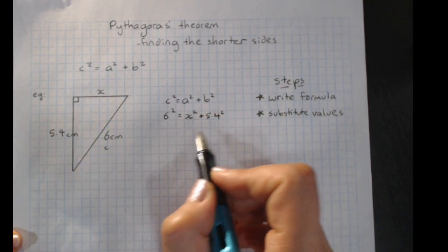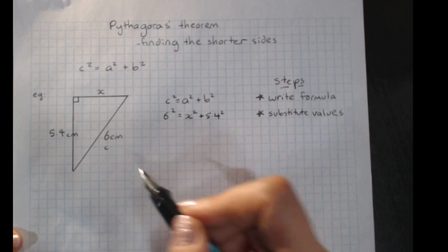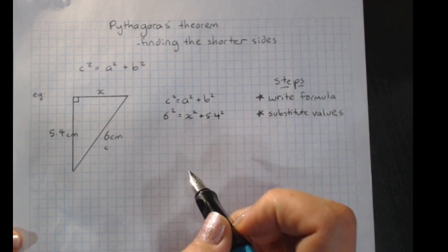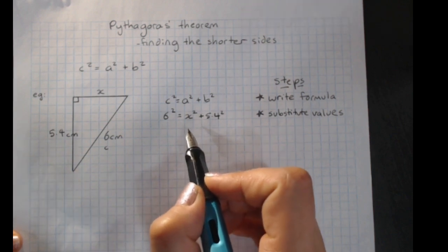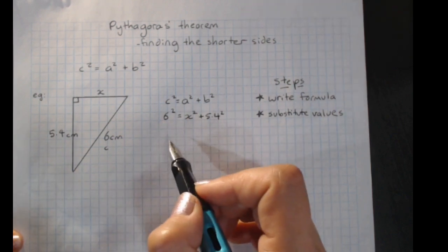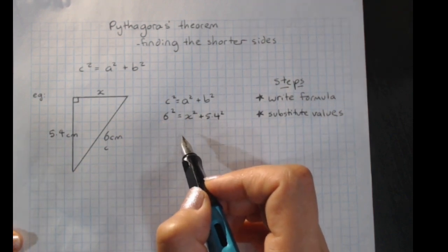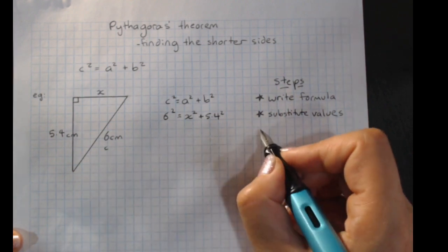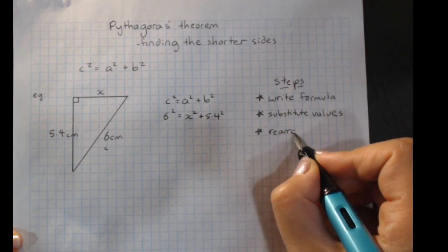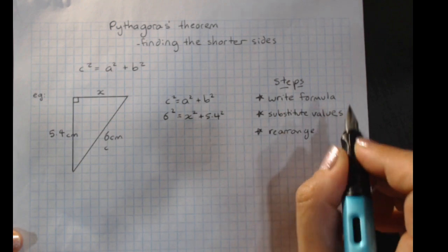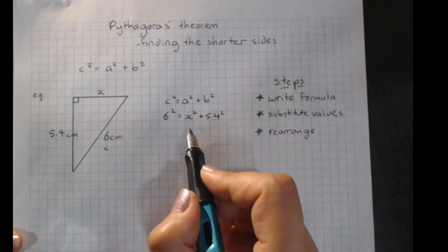It wouldn't matter which one was a or b, because it doesn't matter with the short sides. But now we want to find out what x is. And that means what we have here is an equation that we need to solve to get x on its own to find the value of x. So we'll need to rearrange and solve.